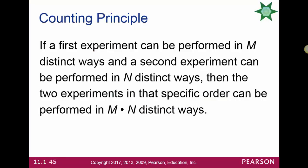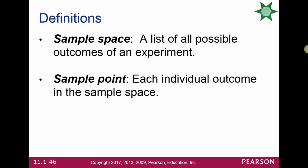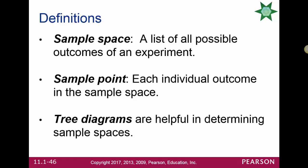Tree diagrams are a great way to show the sample space for an experiment. If the first experiment can be performed in m distinct ways and the second in n distinct ways, the two experiments in that order can be performed in m times n ways. The sample space is a list of all possible outcomes of an experiment, and a sample point is each individual outcome. Tree diagrams are helpful for determining the sample space and individual sample points.